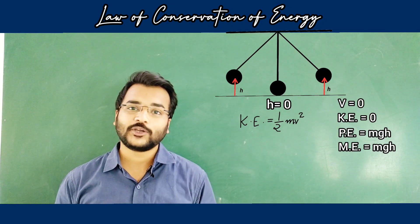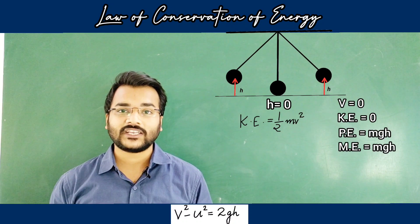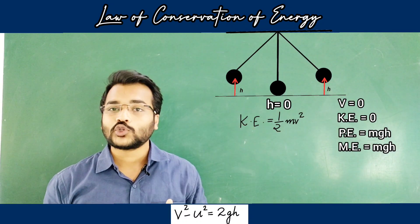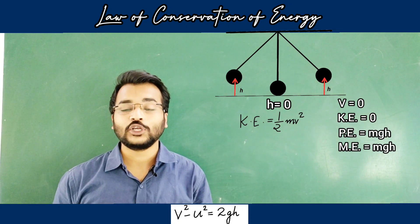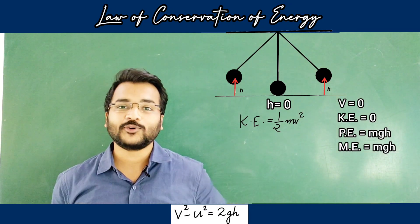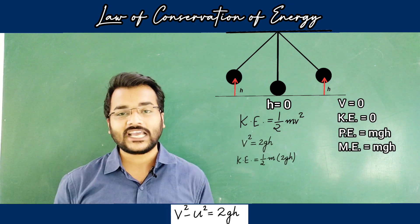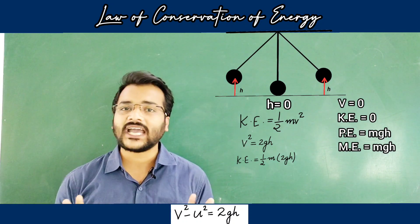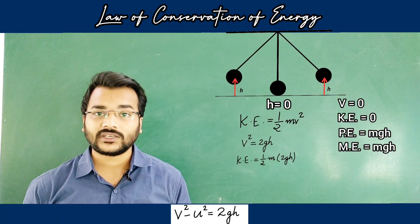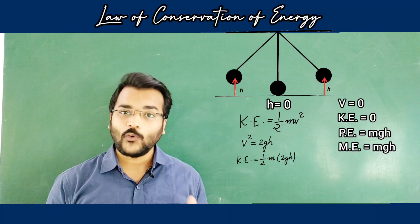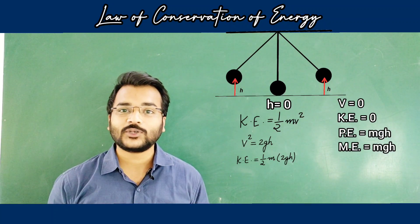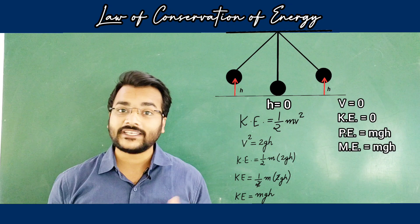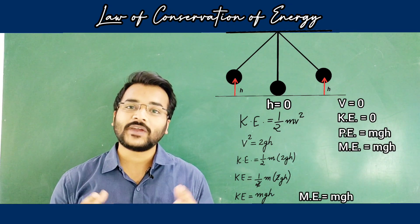We use the third equation of motion: v² − u² = 2gh. The body is coming from the extreme position (initial) to the mean position (final). Since the initial position is the extreme position, the initial velocity u is equal to zero. Therefore v² = 2gh. Now we substitute v² in the formula for kinetic energy: KE = ½mv² = ½m(2gh) = mgh. So kinetic energy at the mean position is also mgh, and since potential energy is zero, the total mechanical energy at the mean position is also mgh.